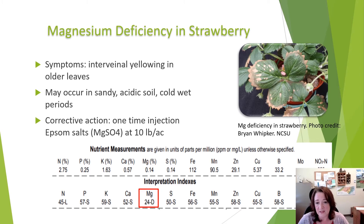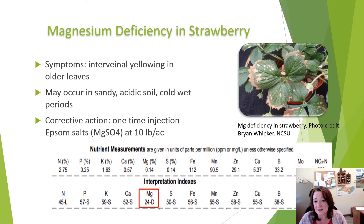Magnesium deficiency is the third most common deficiency in strawberry in North Carolina, and it presents as interveinal yellowing in the older leaves. These deficiencies tend to occur in sandy soil, acidic soil, and during cold, wet periods. The corrective action is an application of 10 pounds of Epsom salt per acre per week until the deficiency clears. In the example below, more than one injection will likely be needed due to the severe magnesium deficiency in the tissue.